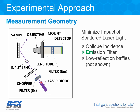In our case, we have a diode laser. We shine it through an exciter filter, then pass the beam through a chopper and onto an input lens. The input lens focuses the beam onto the surface of a sample, and the excitation is at an oblique angle so that the reflected ray does not enter the detection path. On the detection path, we have a microscope objective focused on the surface of the sample, and the light coming through that objective passes through an emitter filter and onto a detector. The oblique incidence helps minimize scattered light in the detection path. The emission filter blocks heavily at the excitation wavelengths, eliminating further scatter. Low-reflection baffles, not shown here, manage the reflected light in the setup.